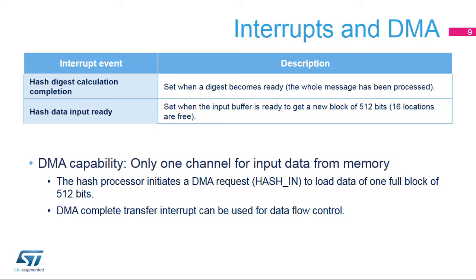In Direct Memory Access, or DMA mode, requests are generated internally for incoming data. The DMA channel must be configured in memory-to-peripheral mode, with a data size equal to 512 bits.